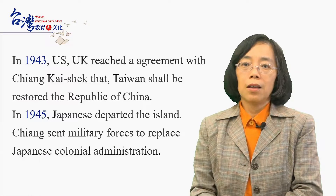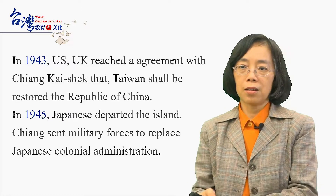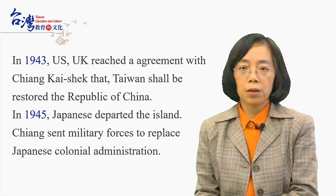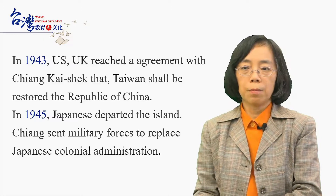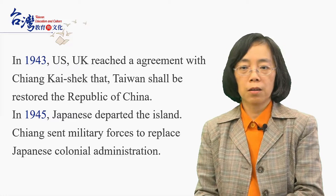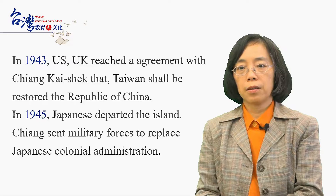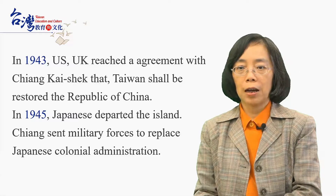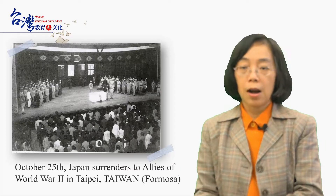In 1943, US and UK leaders met together with Chiang Kai-shek and reached an agreement stating that Taiwan shall be restored to the Republic of China. In 1945, the Japanese departed the island, and Chiang Kai-shek sent military forces to replace the Japanese colonial administration. At that time, military officers from mainland China came to Taiwan and implemented new policies.